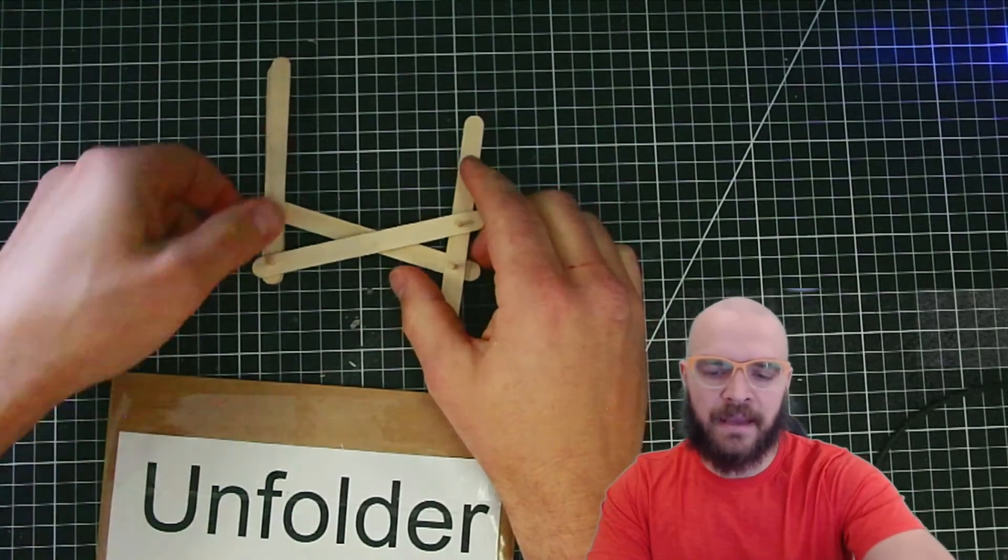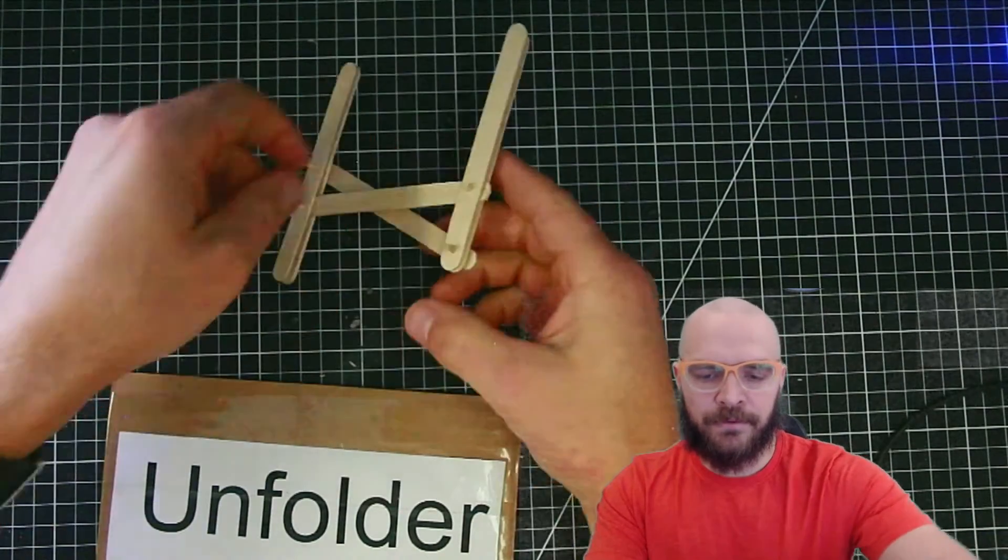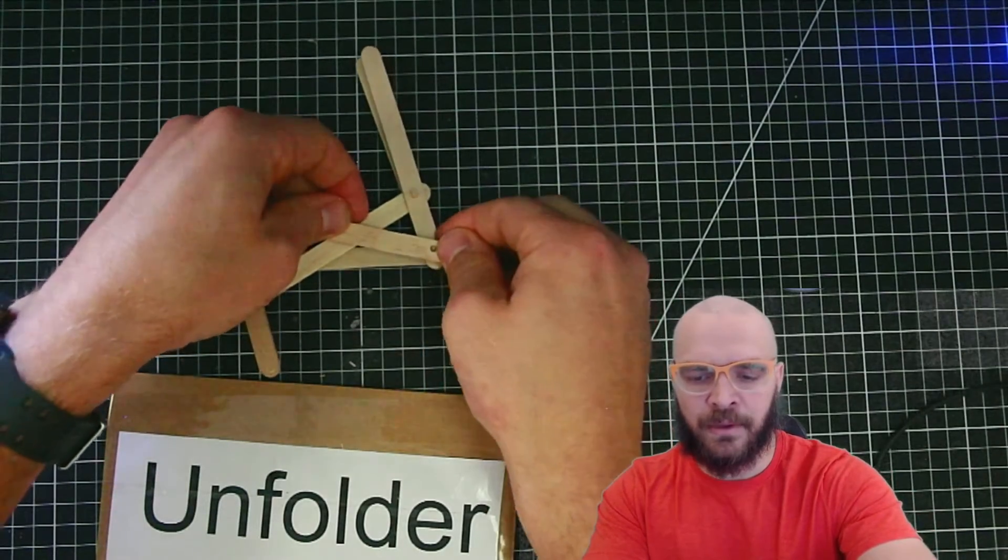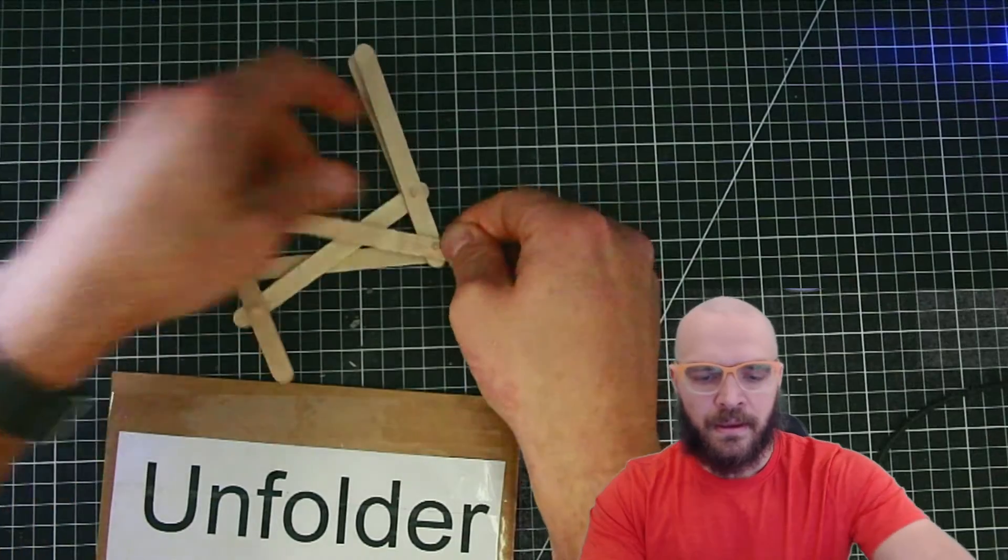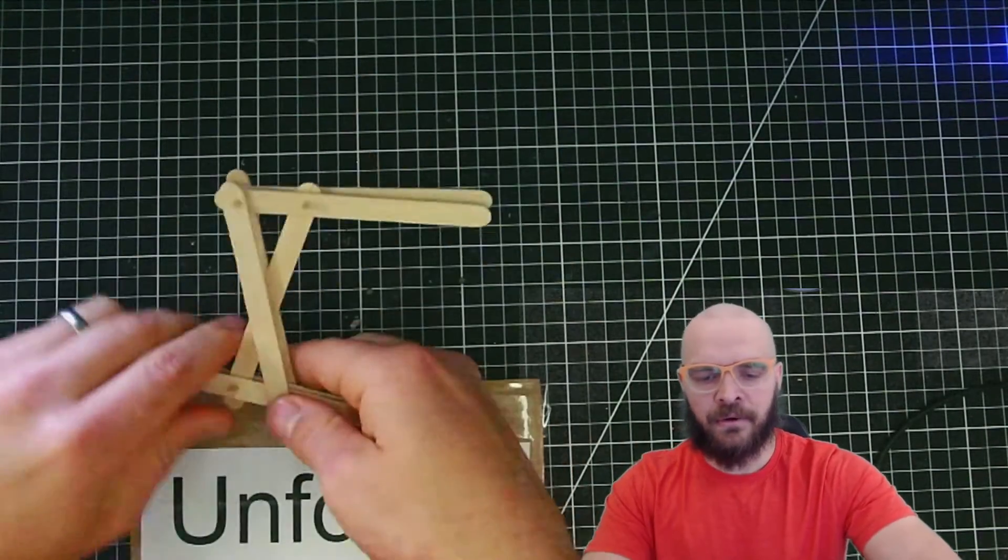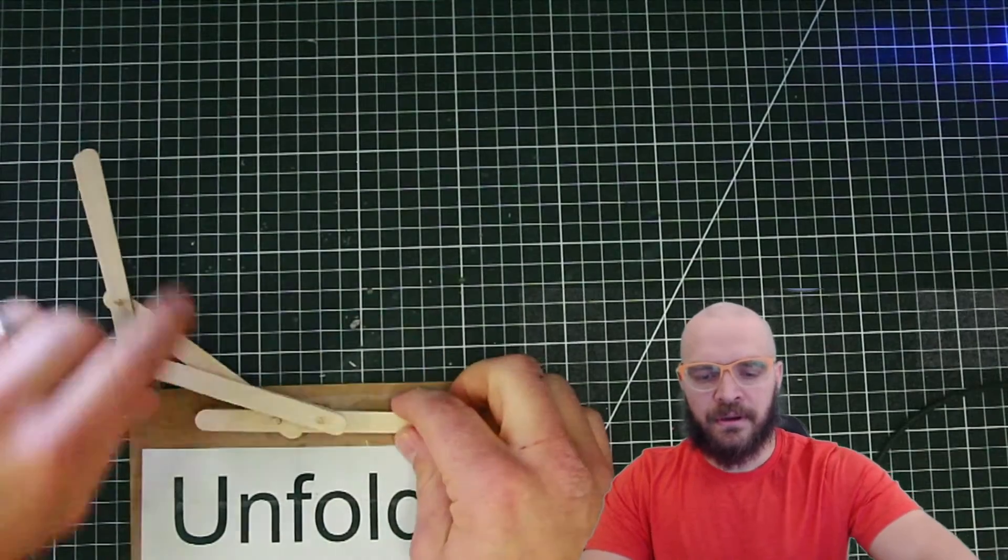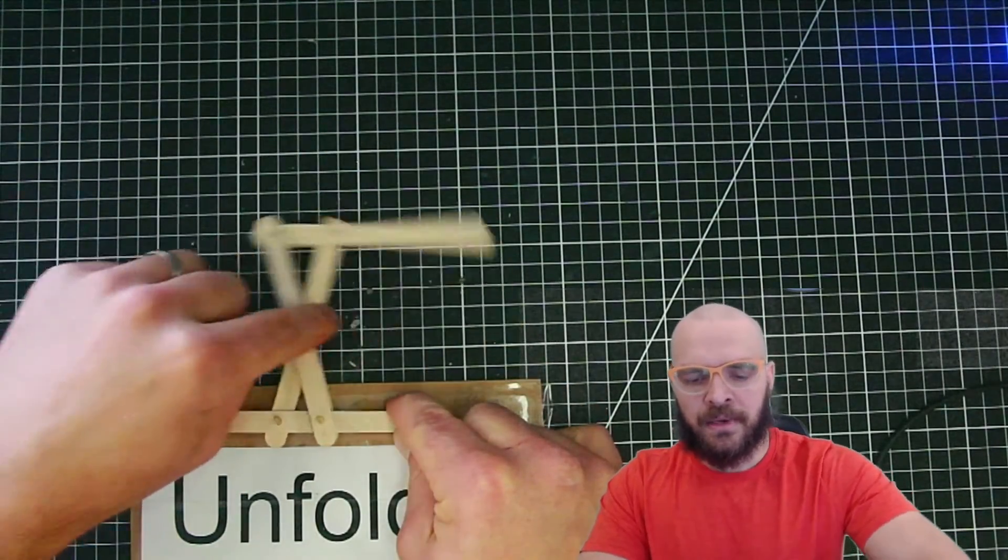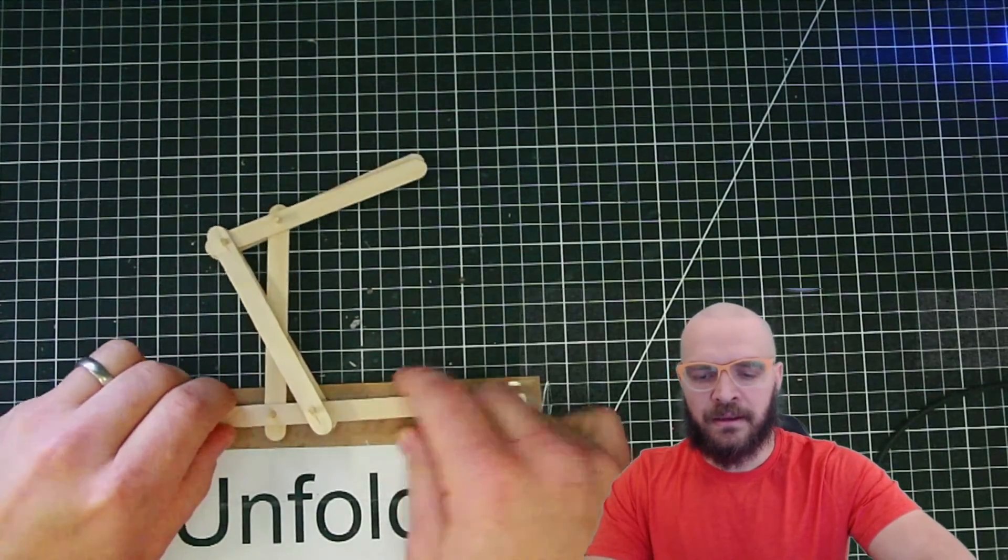There's one of them added. Let's flip it over. This one's going to go on the outside of that whole system as well. Now that that is added, we have our Unfolder.